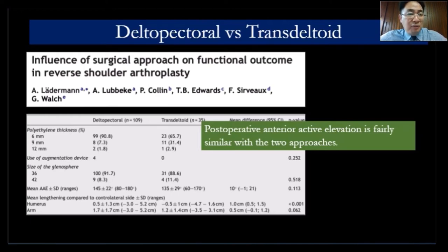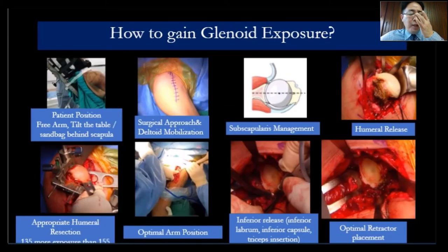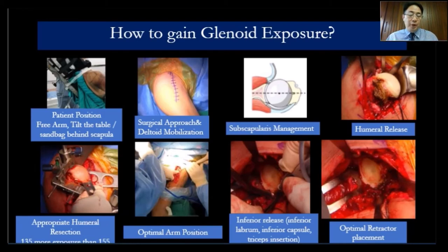However, with the deltopectoral approach there is a higher chance of instability compared to the superolateral approach. Glenoid exposure is key. I release the subscapularis, and I use a 135-degree neck-shaft angle — you have better glenoid exposure with 135 compared to 155. You also need to release the inferior capsule and the tricep insertion, and use an optimal retractor.